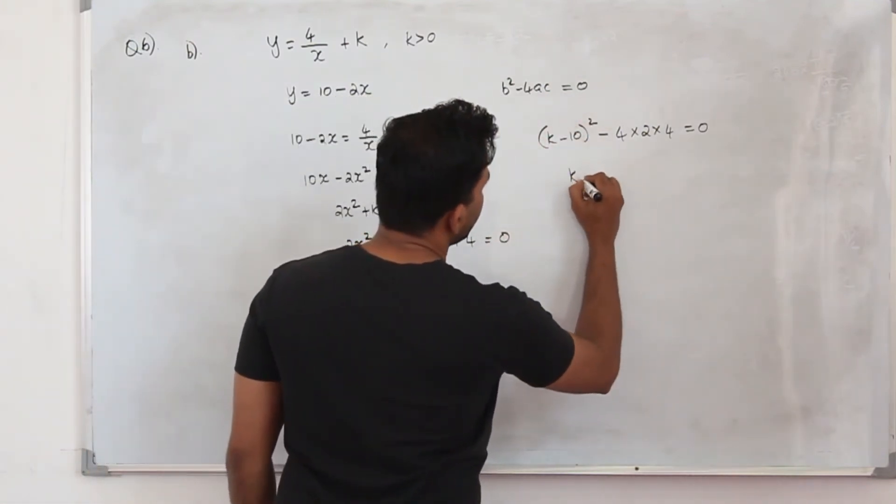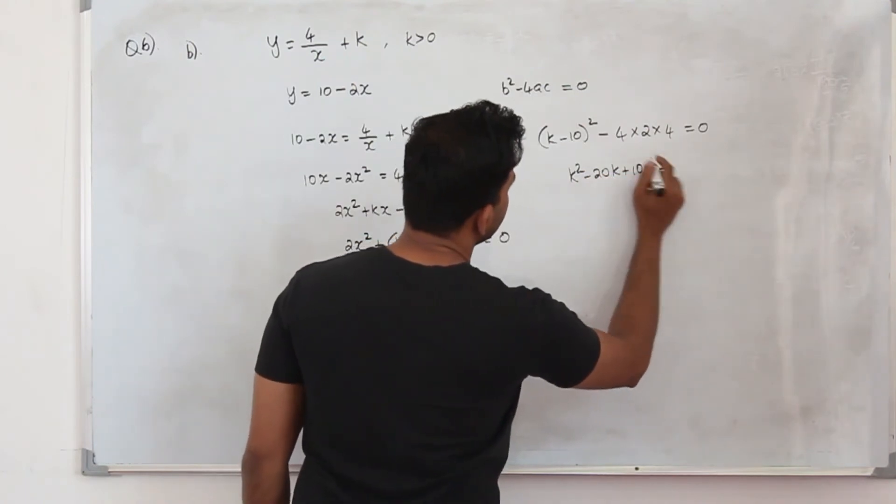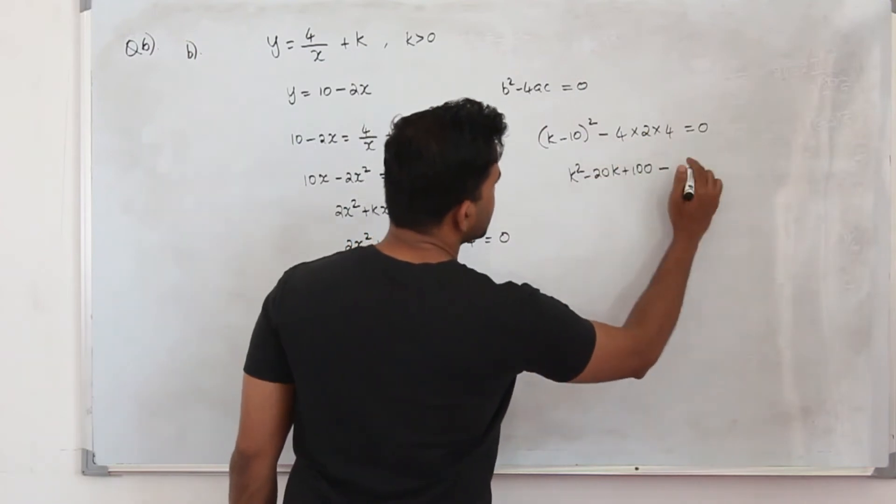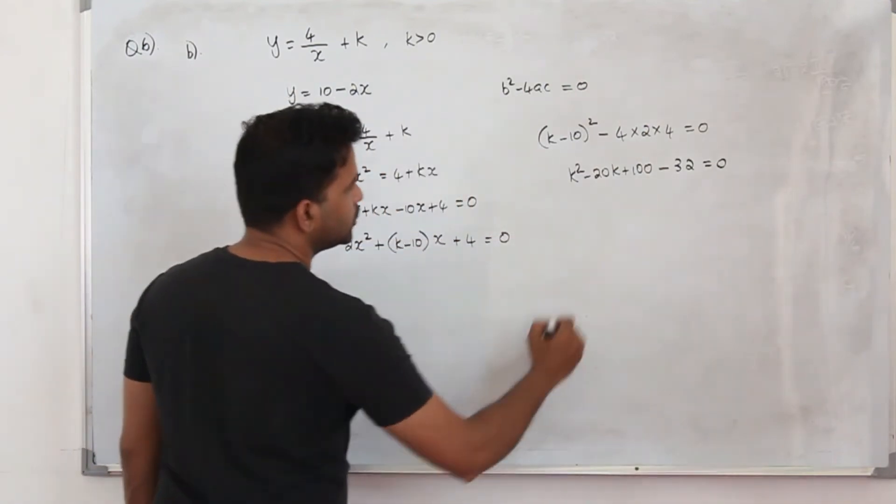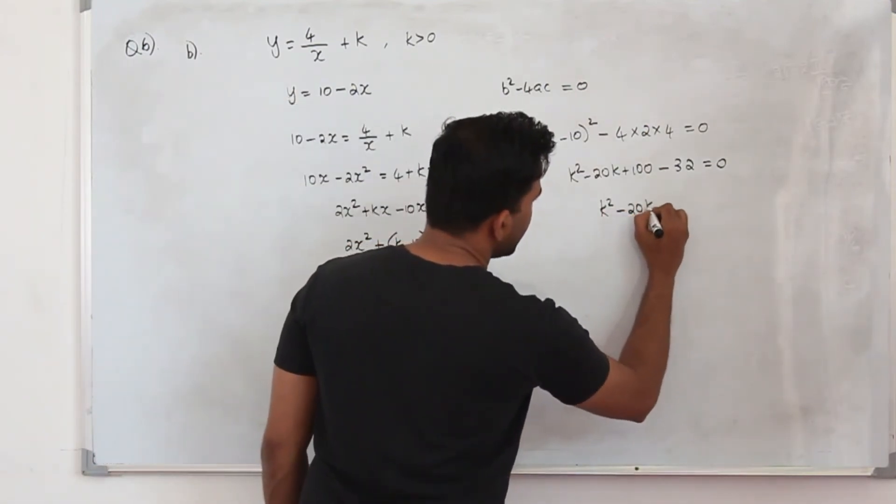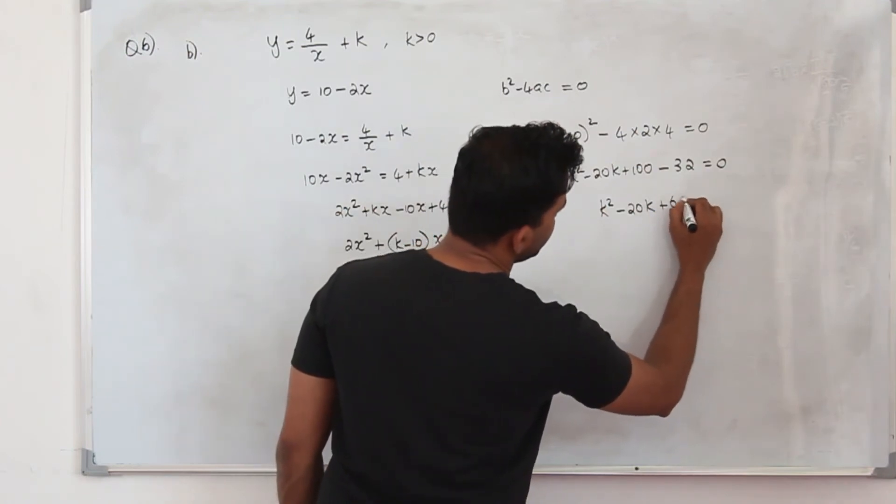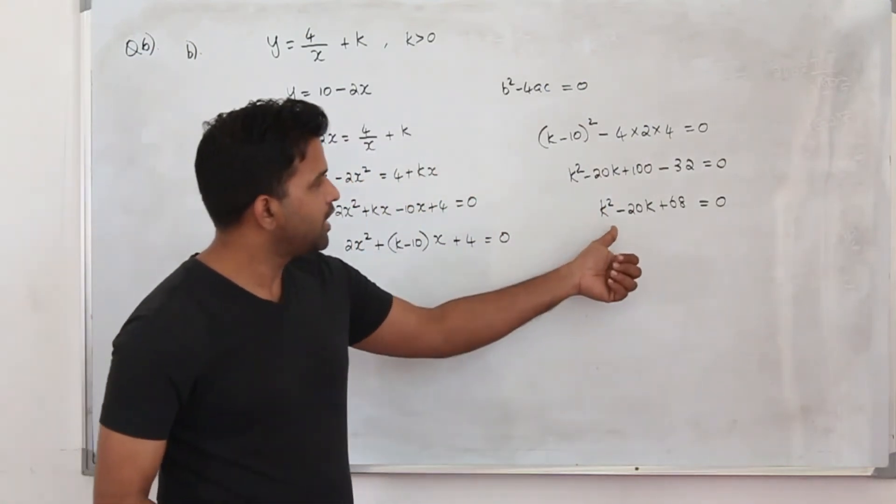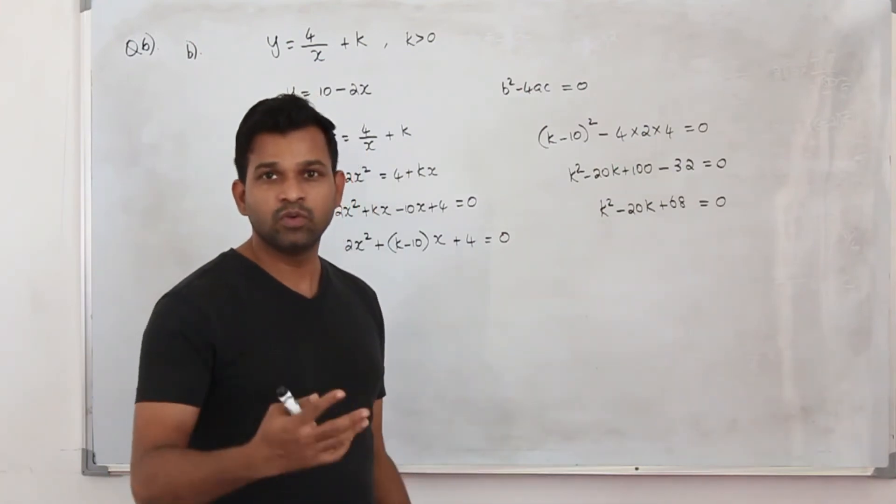Expand this. K square minus 20k plus 100. A minus b whole square. 4 twos are 8. 8 fours are 32. Is 0. So your k square minus 20k plus 68 is 0. Now we have a quadratic equation. Solve this equation. You will get 2 k values.